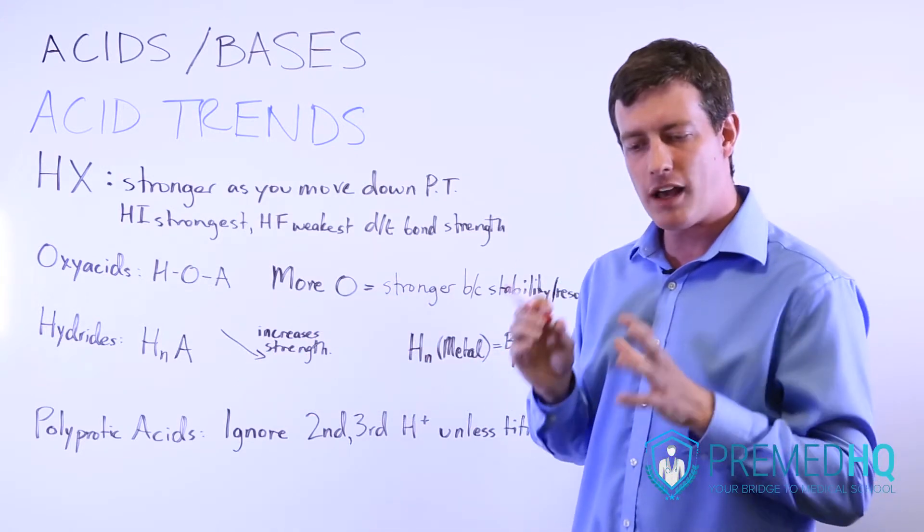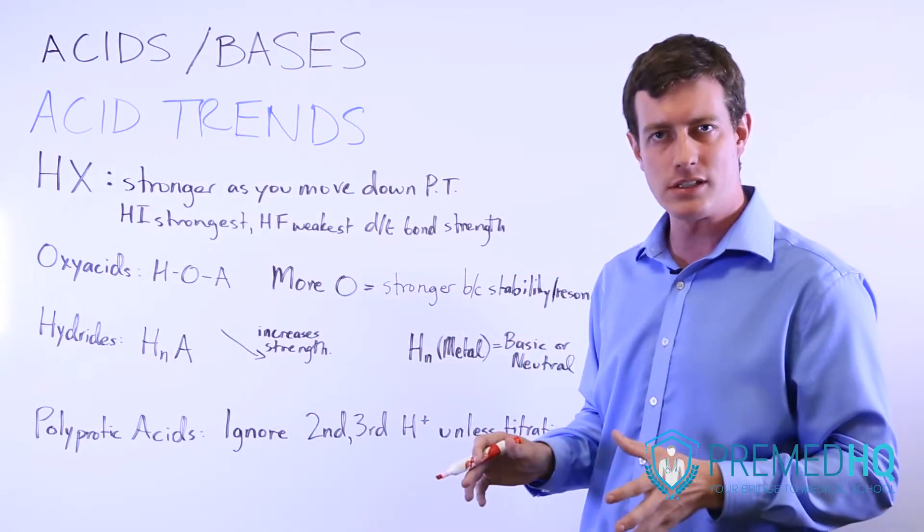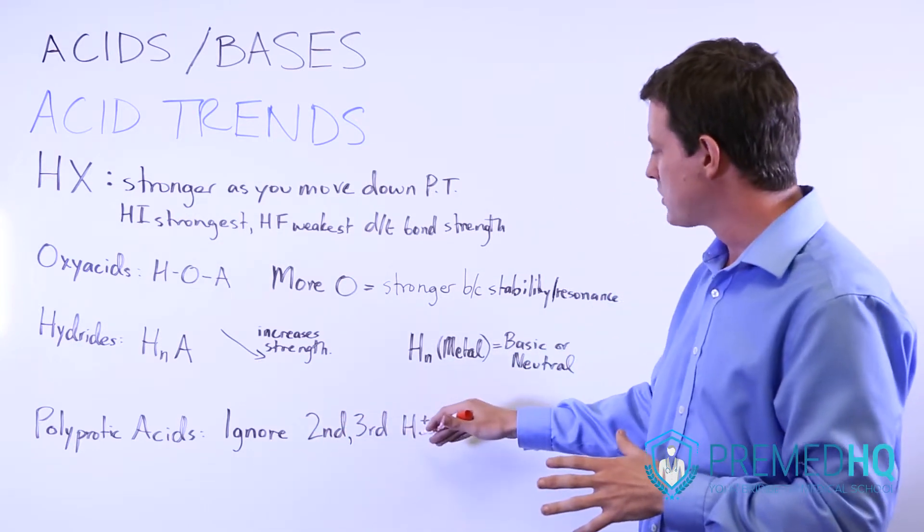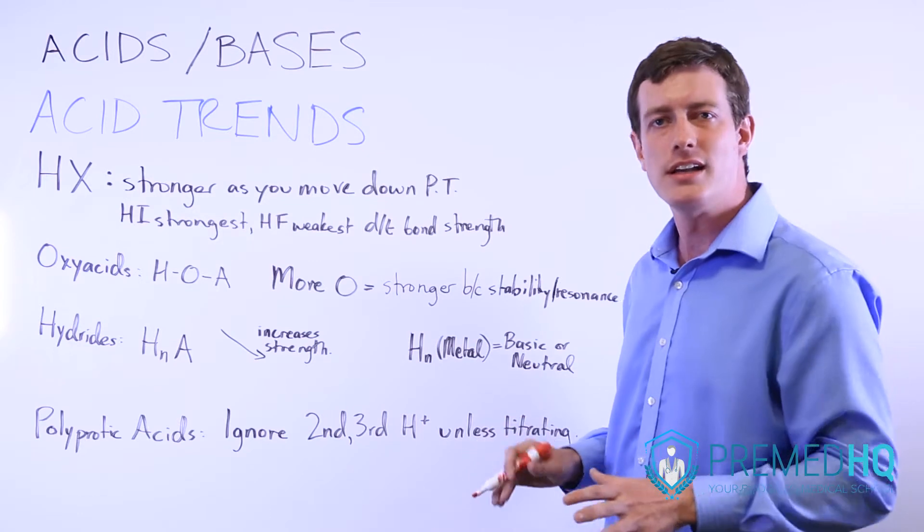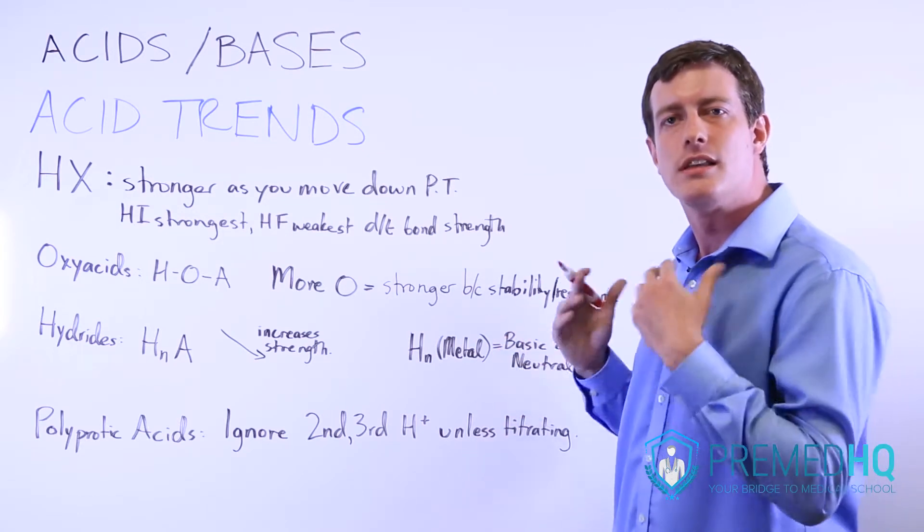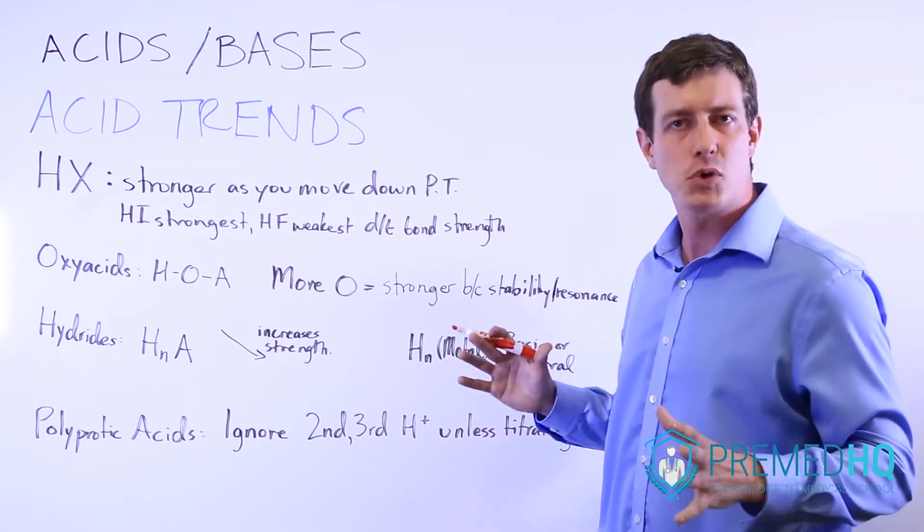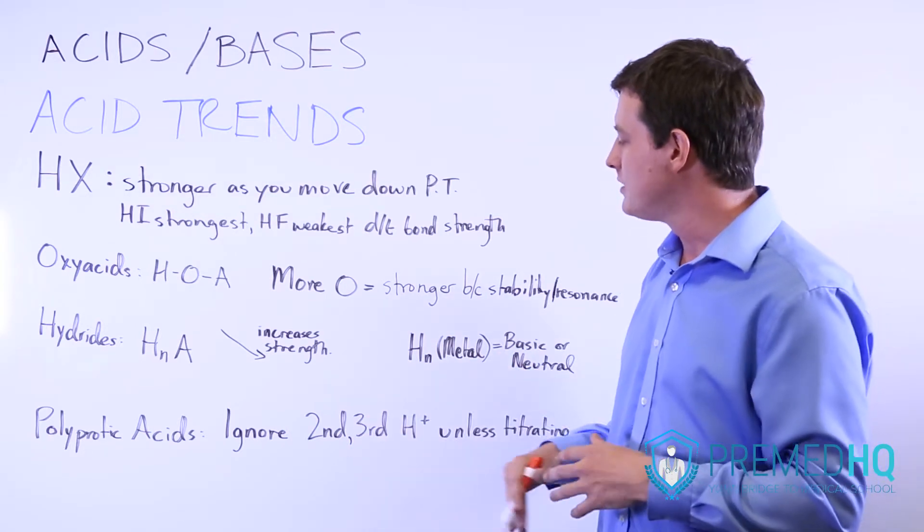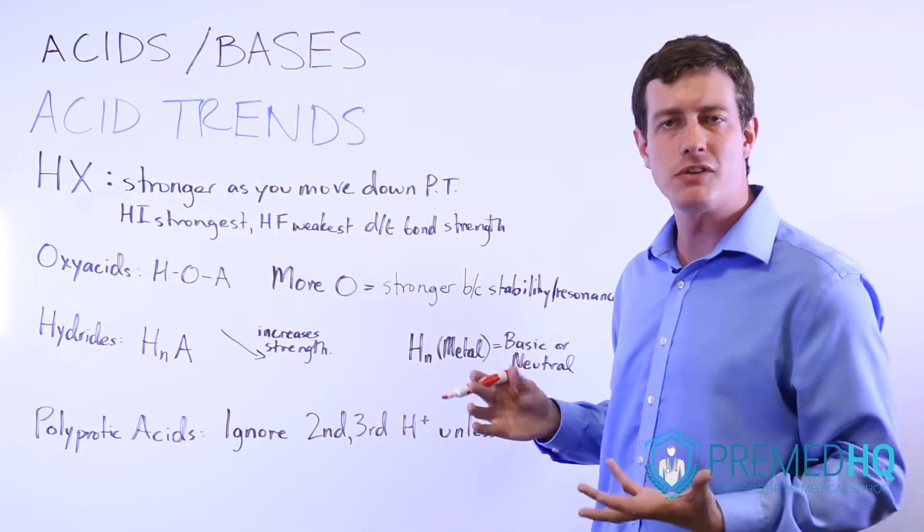So anytime you have an acid with multiple hydrogens, what you can do is you can ignore the second and third protons unless you're titrating it. That first proton that is dissociated is so much more acidic than the others that these two don't play into the pKa and the pH very much.